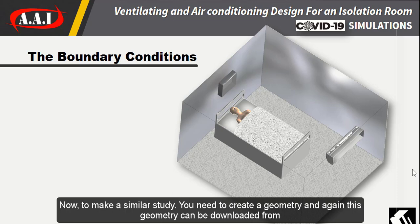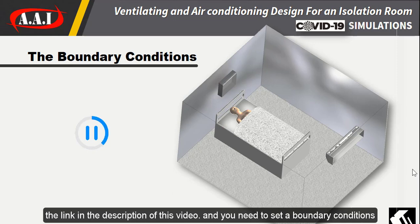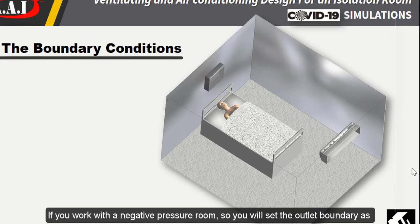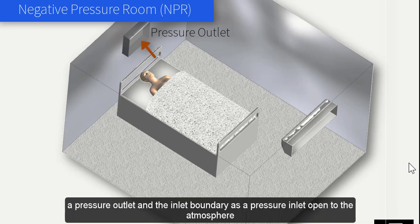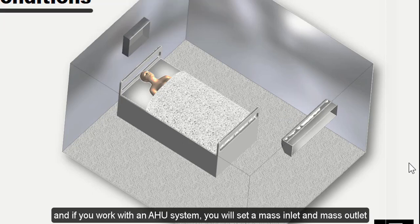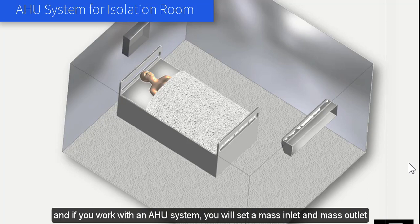To make a similar study, you need to create a geometry — which can be downloaded from the link in the description of this video — and you need to set boundary conditions. If you work with a negative pressure room, you will set the outlet boundary as a pressure outlet and the inlet boundary as a pressure inlet open to the atmosphere. If you work with an AHU system, you will set a mass inlet and mass outlet.